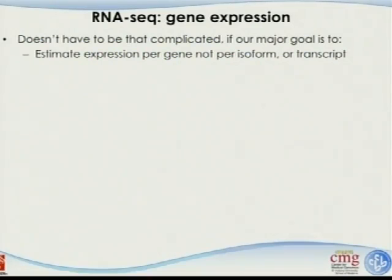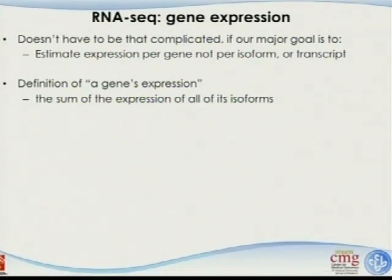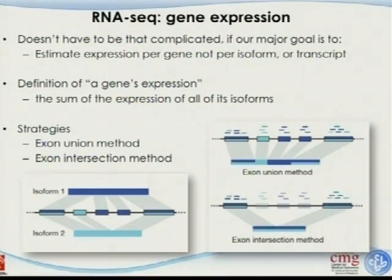But this doesn't have to be that complicated. If our goal is to estimate gene expression per gene — not per isoform — I just want to know how much this gene is expressed overall. Alternative splicing and which isoform expresses how much — that's a separate question. So let's define gene expression as the sum of the expression of all its isoforms. Straightforward.